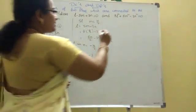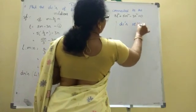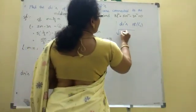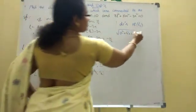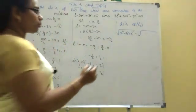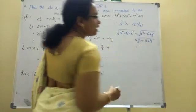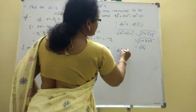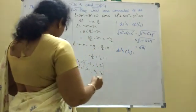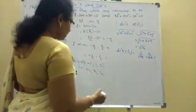Now we calculate the direction cosines. The DCs of L1: divide each DR by the square root of a squared plus b squared plus c squared. For L1, that is root of 1 squared plus 2 squared plus 3 squared, which is root of 1 plus 4 plus 9, giving root 14. So the DCs of L1 are 1 by root 14, 2 by root 14, 3 by root 14.